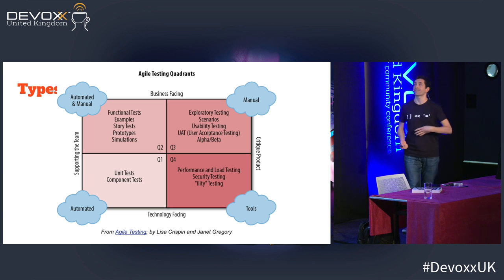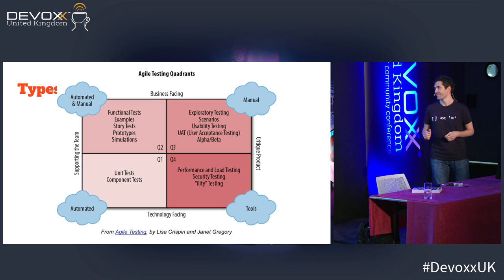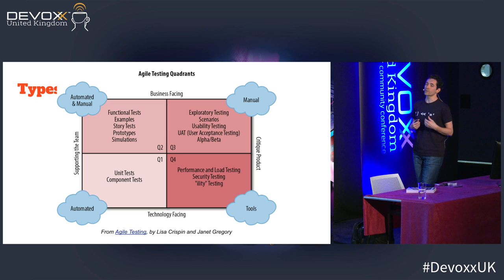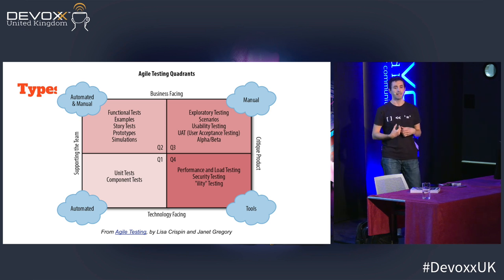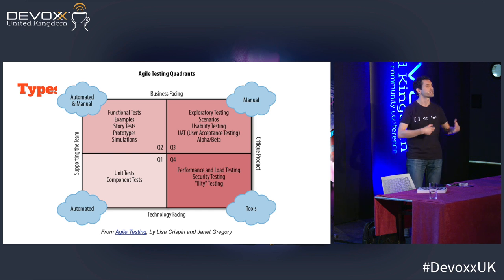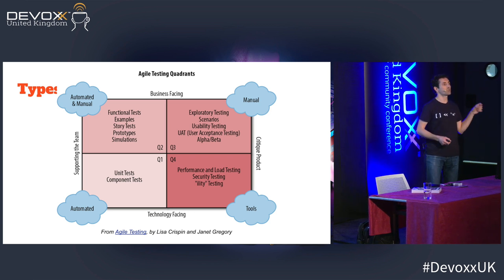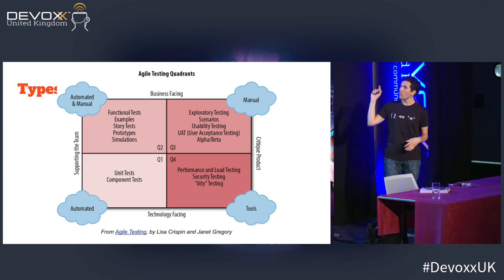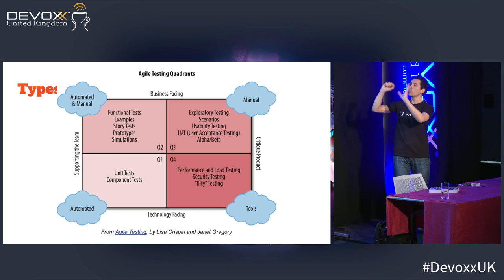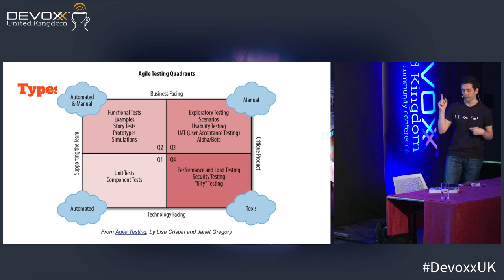On the right-hand side, we have the tests that are there to critique the product. That's when you're trying to poke holes in it. That's a typical moment when the developer says 'I'm done,' and then the tester comes and says 'we'll see about that.' On the vertical axis, we can differentiate tests depending on what they're facing. On the bottom, we have the technology-facing tests — those are typically testing the implementation, testing the connectivity, testing the protocols. But then on the top, we have the business-facing tests, which are the ones verifying that whatever you're doing is actually delivering value.